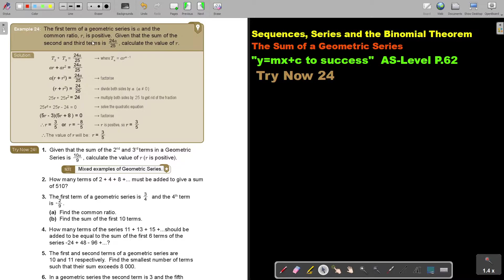So remember the sum of the second and the third term. The first term is A, second term is AR, third term is AR squared. So if I add that, I will get that. Take A out as a common factor, and then divide by A and then the A's cancel.